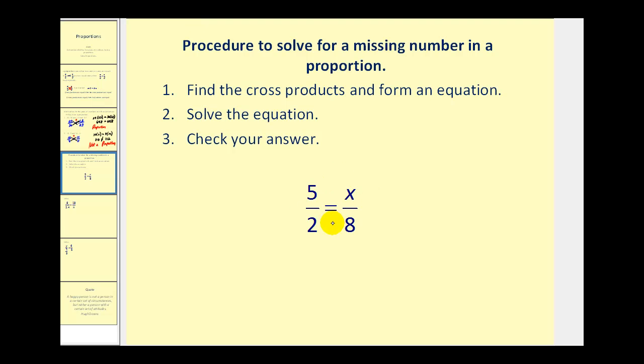So since we know these are equal to each other, the cross products must be equal. I always like to do the cross product that involves the variable first. So 2 times x would be 2x, must equal 5 times 8, which is 40. So now we solve this equation by dividing both sides by 2. And we have x equals 20.